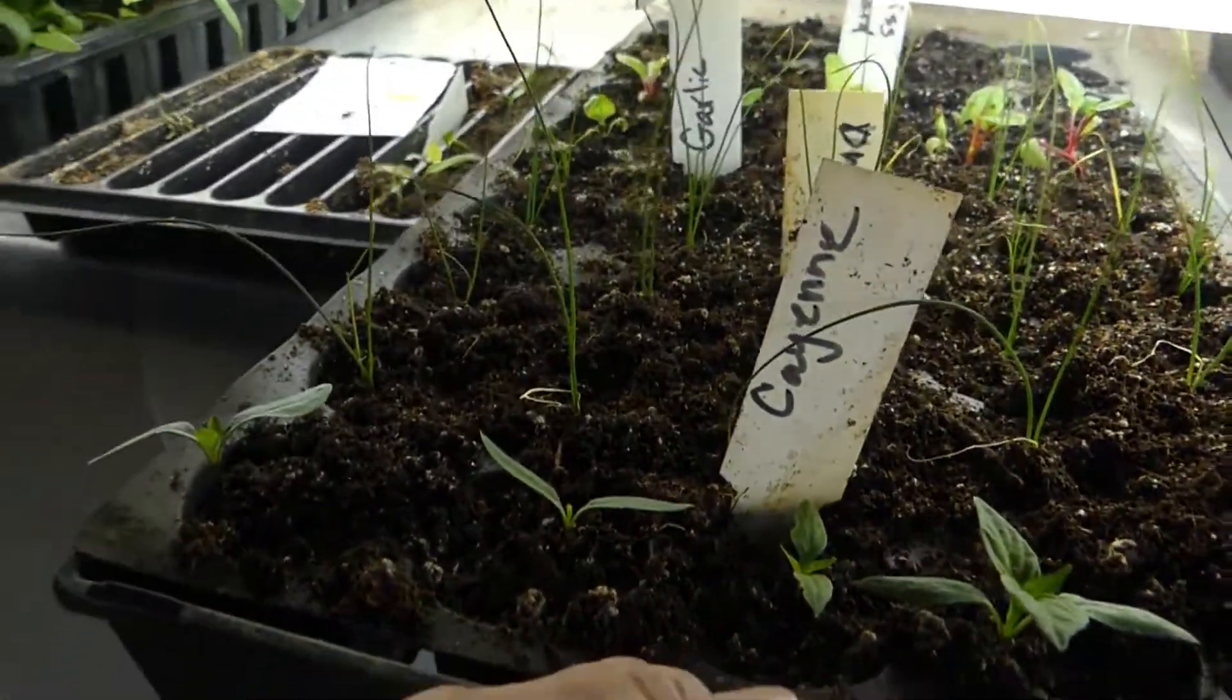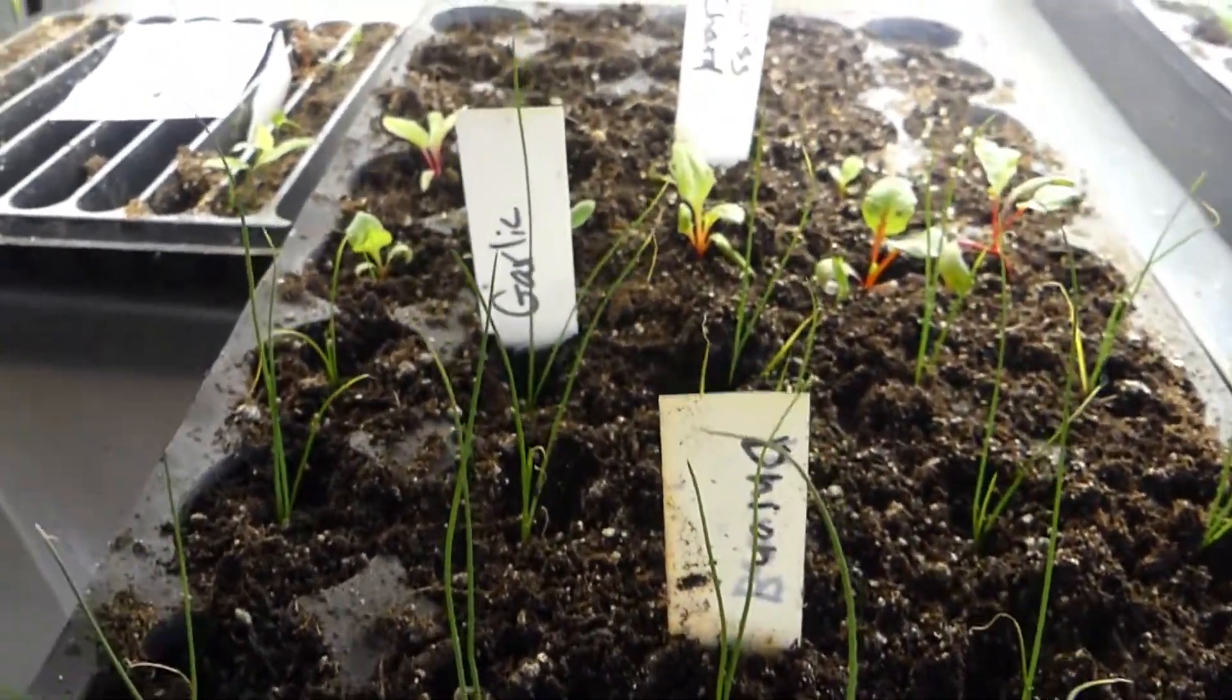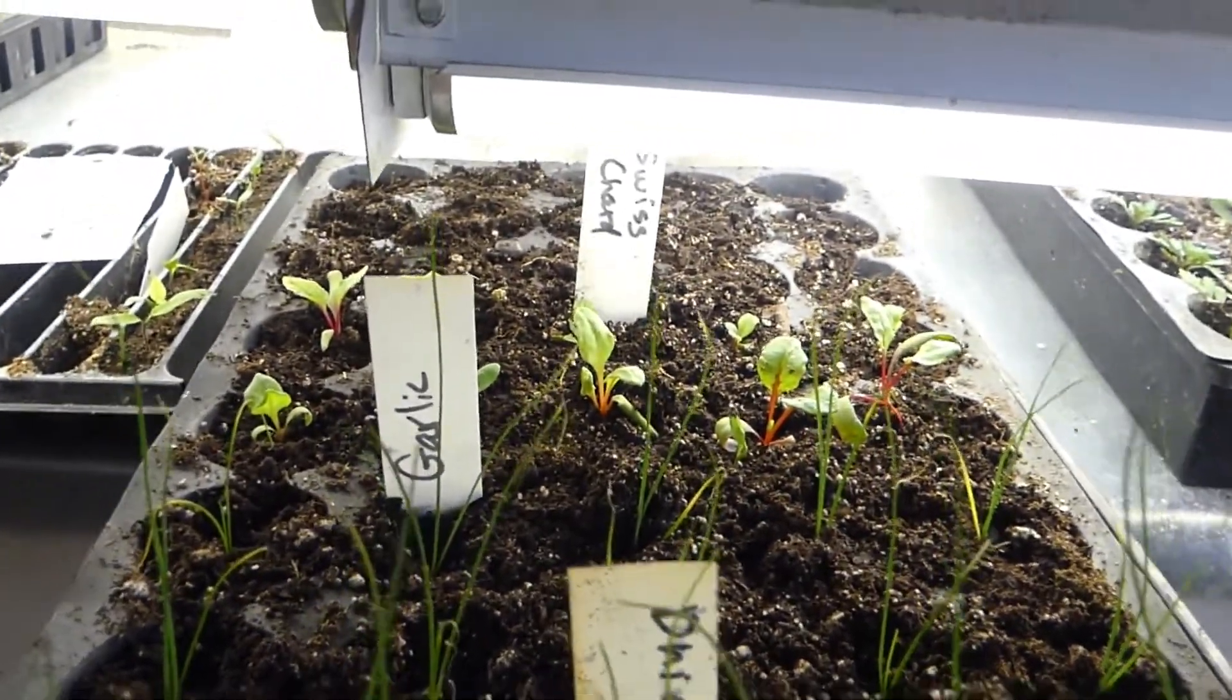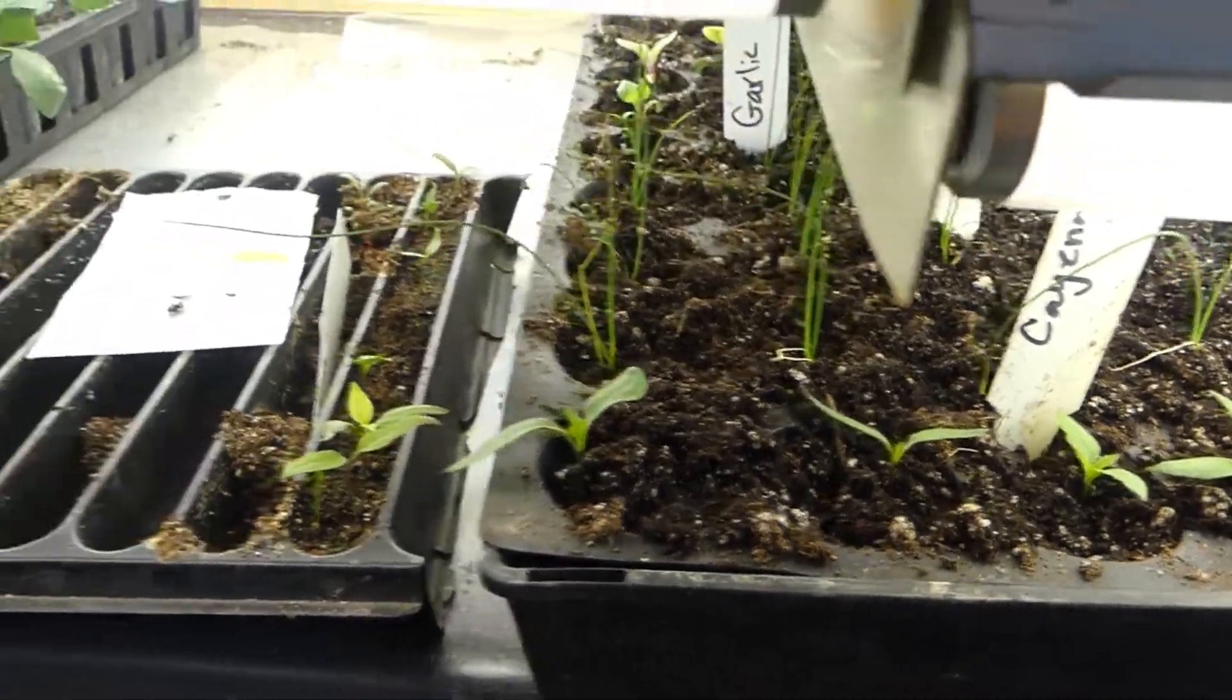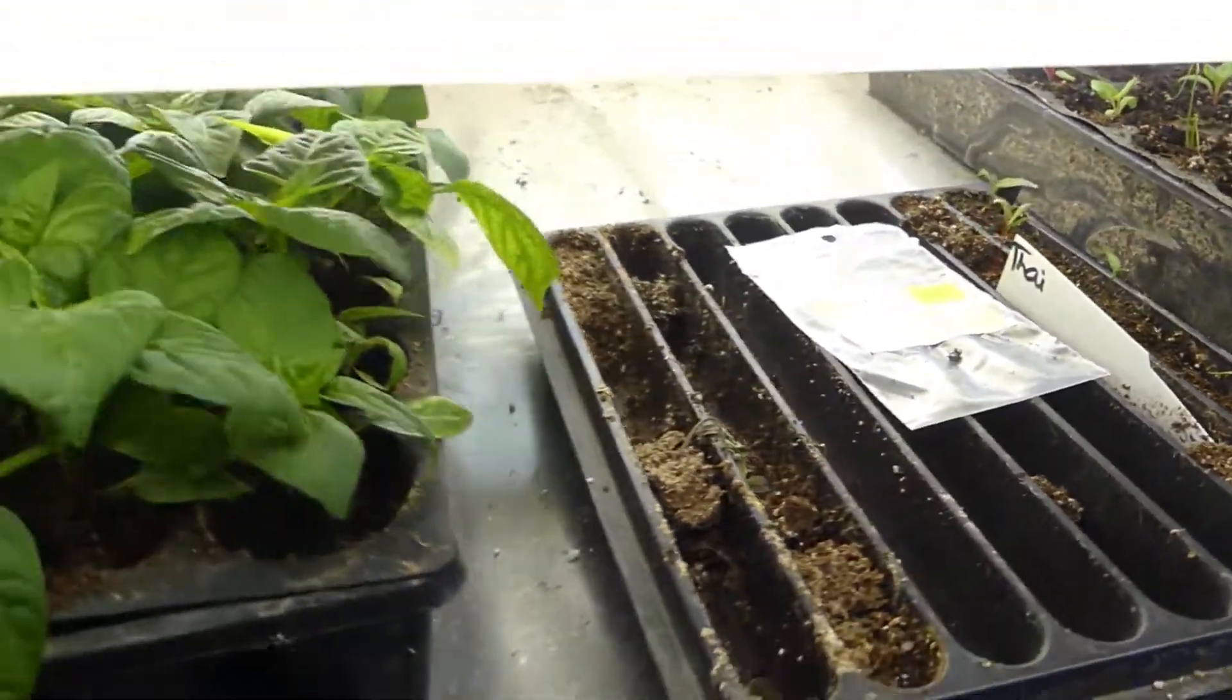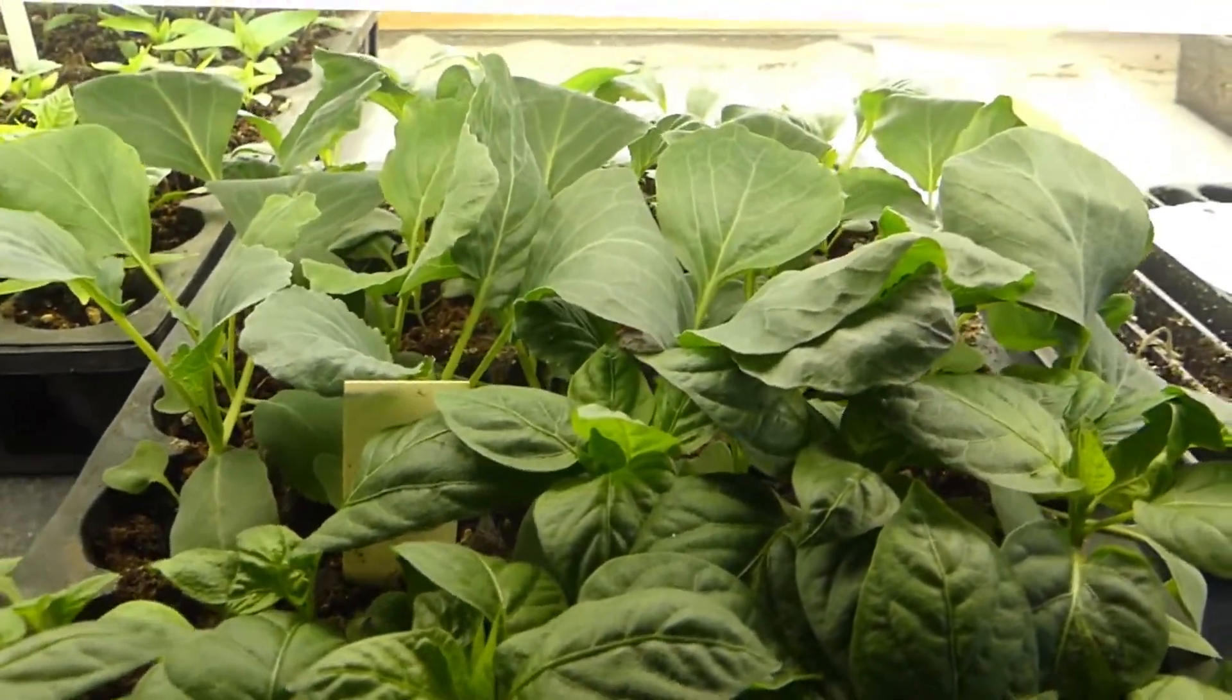This tray is my cayenne peppers, onion chives, garlic chives, and Swiss chard. That's probably where I'm going to put my Thai peppers too because there's some space there.